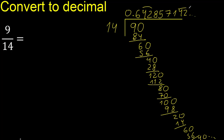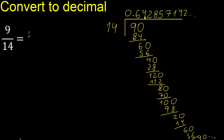The result is 42, 42 — repeating. Therefore, the decimal repeats here, giving a repeating pattern.